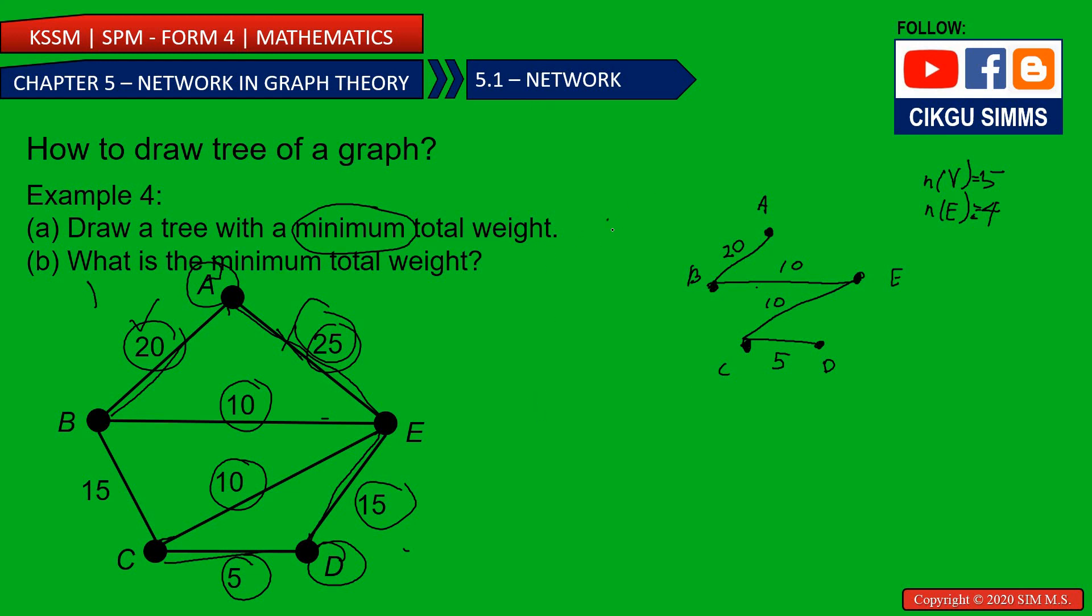And then we answer question B. What is the minimum total weight? Minimum total weight, you just add all the weight. It would be, so the minimum would be 45. So that's the answer.